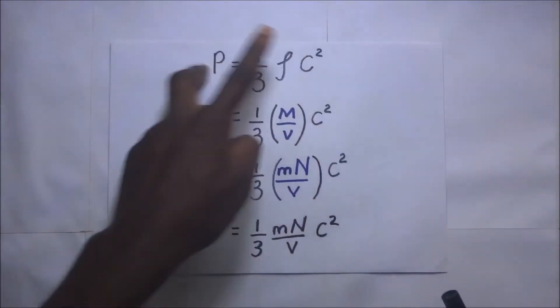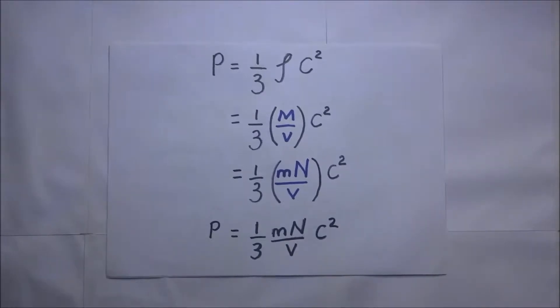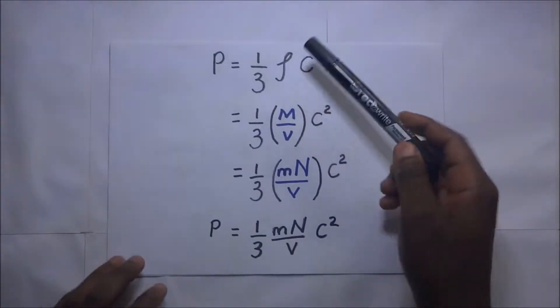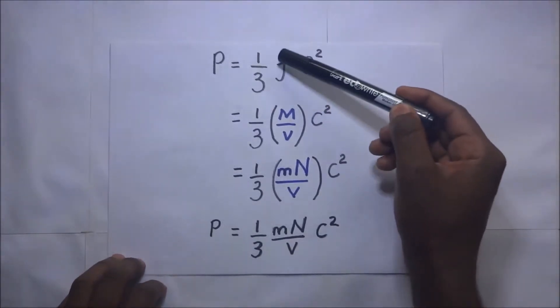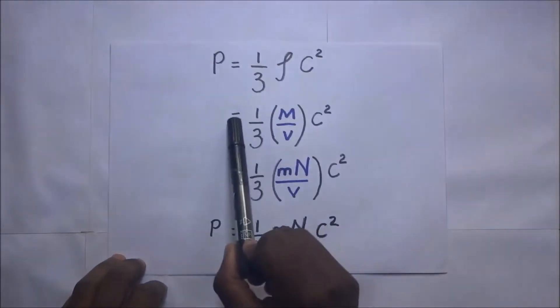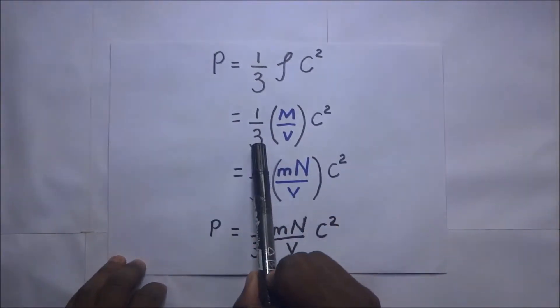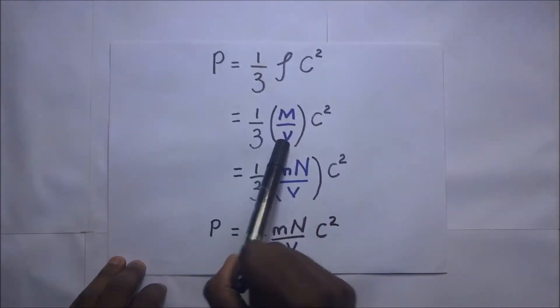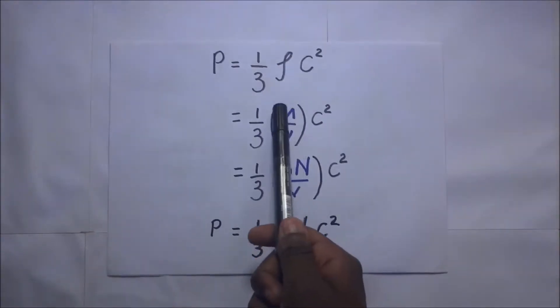We are going to start from this expression and break it down. We shall begin by breaking down the density. Density is equal to mass over volume, so this is going to be one-third times the density, which is mass over volume, times c squared. This is the mass of the gas.